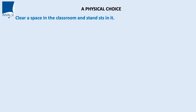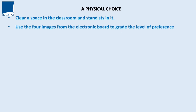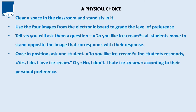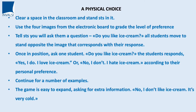Clear a space or go outside. Use the four images from the electronic whiteboard, or put words on the walls to grade preference in the space. Tell students you'll ask a question — 'Do you like ice cream?' — and all students move to stand opposite the image that corresponds with their response. Once in position, ask one student: 'Do you like ice cream?' The student responds: 'Yes, I do, I love ice cream' or 'No, I don't, I hate ice cream.' Continue with as many examples as useful. You can expand by asking for extra information: 'No, I don't like ice cream — it's very cold.'